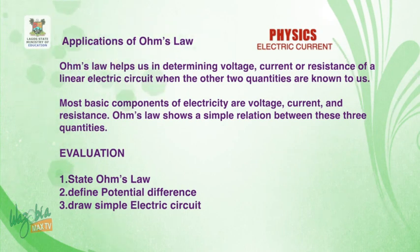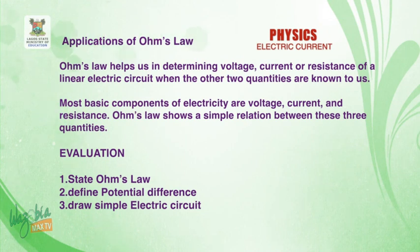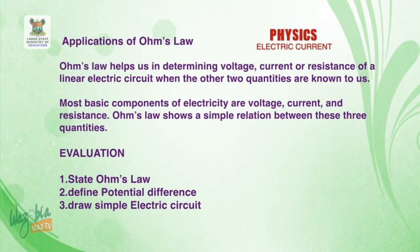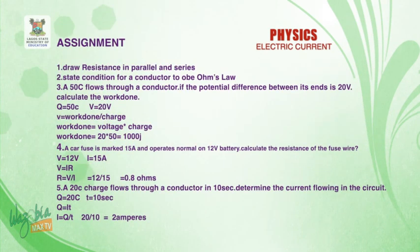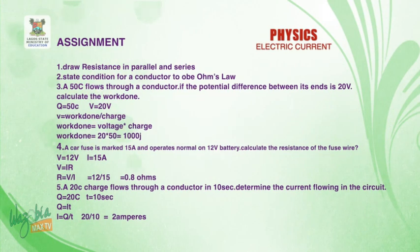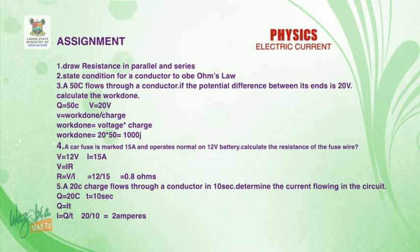Let's look at the classwork for today. Evaluation one: State Ohm's law. Ohm's law states that the electric current in a given metallic conductor is directly proportional to the potential difference across its ends, provided that the temperature of the conductor and other physical factors such as length and cross-sectional area remain constant. Two: Define potential difference. Potential difference is the work done in taking a unit charge from one point to another — from a lower potential to a higher potential. Three: Draw a simple electric cell. We also have assignments: draw resistance in parallel and in series, and state the condition for a conductor to obey Ohm's law.